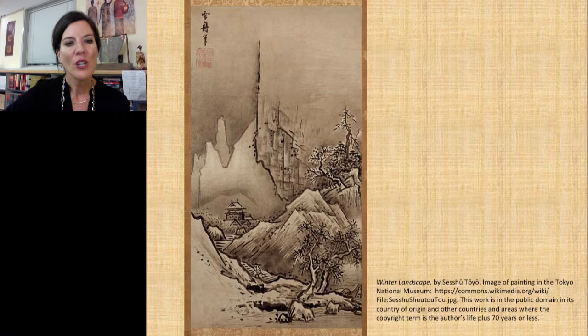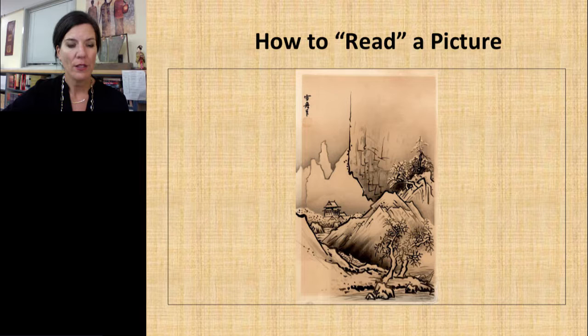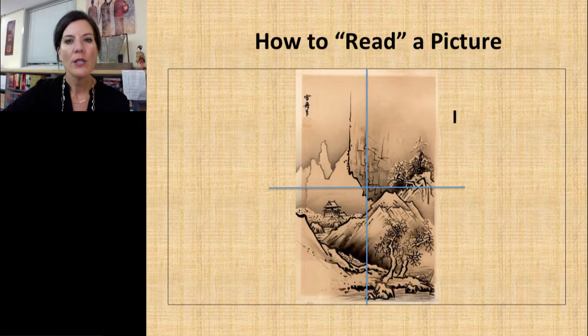So, when you look at this image, what do you see? What's the focal point? What's the first thing that catches your eye? Let's take a closer look to read the picture. What I'd like to do is divide the image into four quadrants along an x-y axis, just like in math class. What do you see in quadrant one, quadrant two, three, and four?